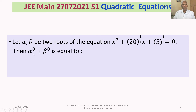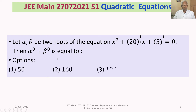Then alpha to the power 8 plus beta to the power 8 is equal to what? The four options are: Option 1: 50. Option 2: 160. Option 3: 100. Option 4: 10.